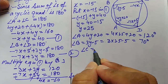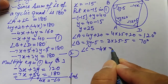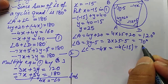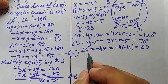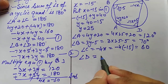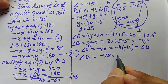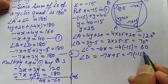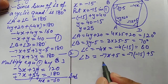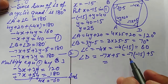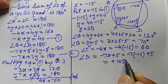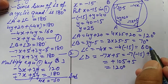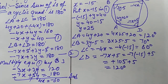Angle C = −4x = −4(−15) = +60°. Angle D = −7x + 5 = −7(−15) + 5 = 105 + 5 = 110°. This is how we find all the angles of the cyclic quadrilateral. Thank you.